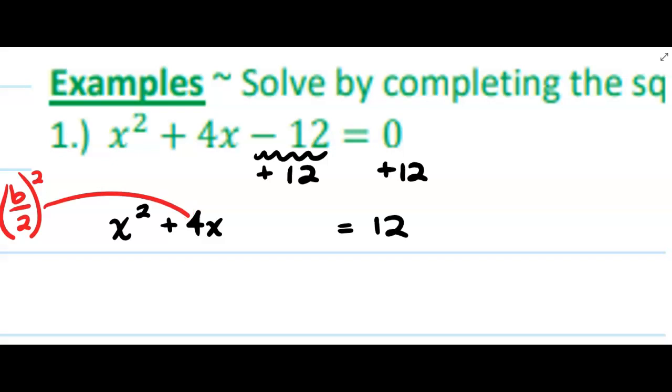So I'm going to take half of 4 and square it and add it on both sides, because what you do to one side of an equation, you do to the other. Half of 4 is 2, 2 squared is 4.